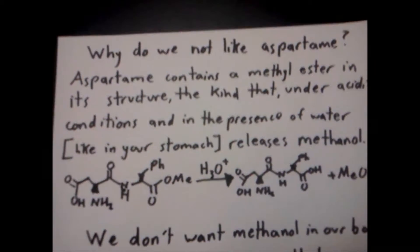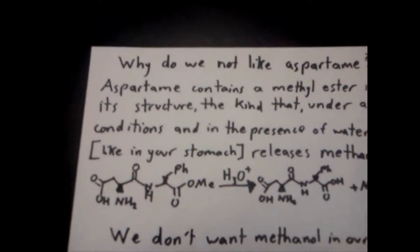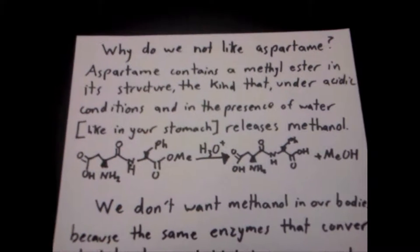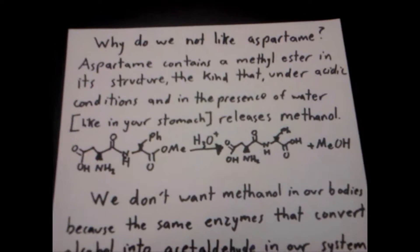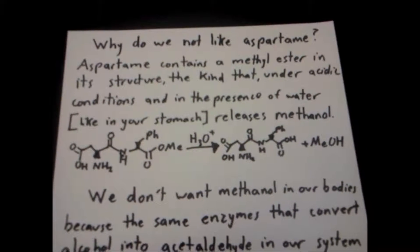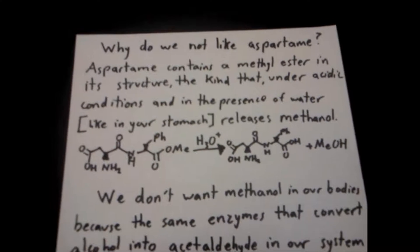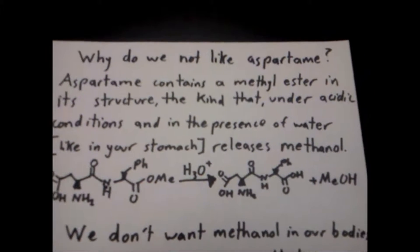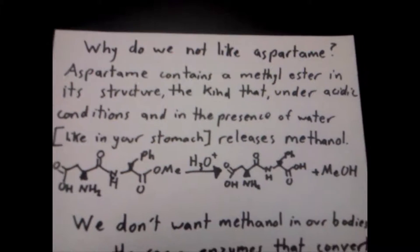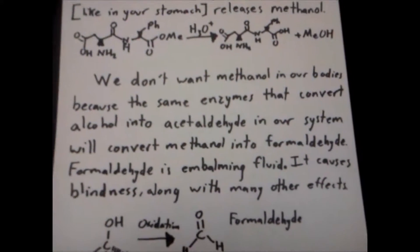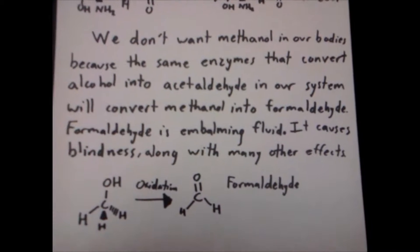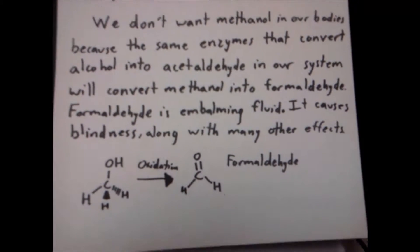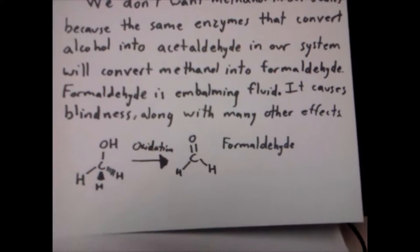Aspartame contains a methyl ester in its structure — the one we had to make by putting phenylalanine in methanol. Methyl esters, when placed into acidic conditions in the presence of water, are converted to a carboxylic acid, which is thermodynamically favored — but the problem is this releases methanol. Methanol is closely related to ethanol, so it absorbs into our bodies very quickly. We don't want methanol in our bodies because the same enzymes that convert alcohol into acetaldehyde will instead convert methanol into formaldehyde.